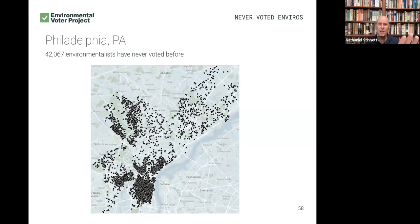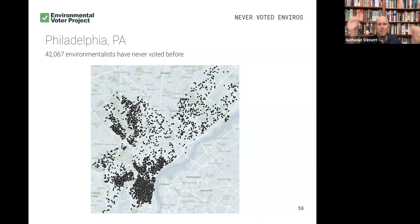To be clear, have we individually spoken with every single one of these people and confirmed that climate is their number one priority? No — these are probabilistic scores. But these are people with really high probabilistic scores telling us that it is so likely they list climate as a top priority that we think it's a good bet to go after them, and not worry about changing their minds or educating them about climate, but instead just focus on turning them from non-voters into new voters, and then new voters into consistent voters.